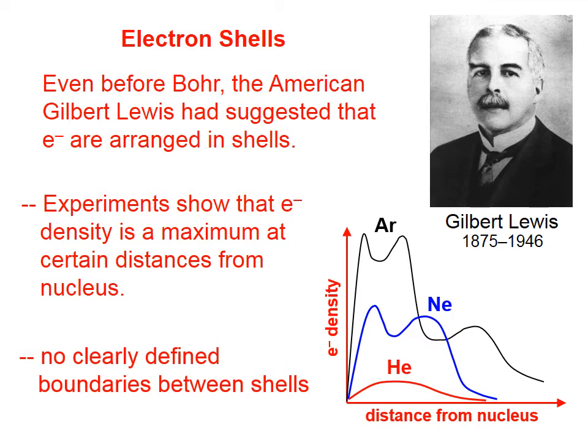These graphs also show that there is no clearly defined boundary between one shell and another. In other words, the shells are diffuse, they're fuzzy, they kind of fade one into the other. They're not clearly defined like planets going around the Sun.